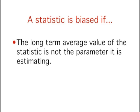Let's move on to more formal definitions, but remember the concepts are the same as in our bathroom scale example. When we say a statistic is biased, we mean that the long-term average value of the statistic is not the parameter it is estimating. In our scales example, the statistic is the weight reported by the scale in a single weighing, and the parameter is your true weight.